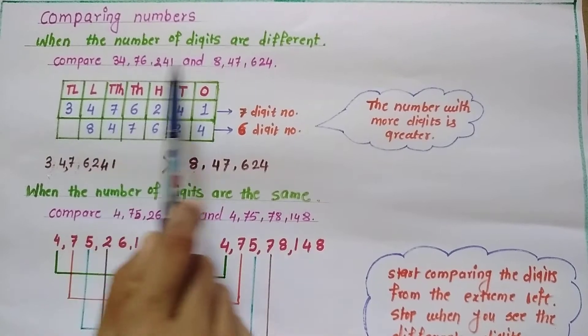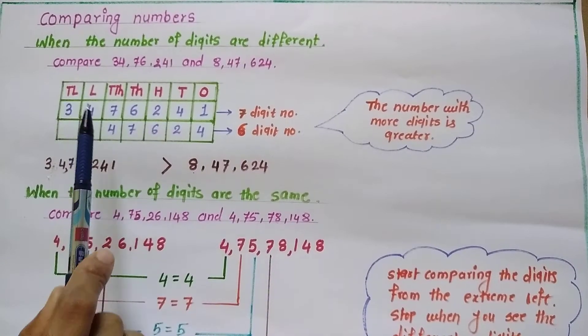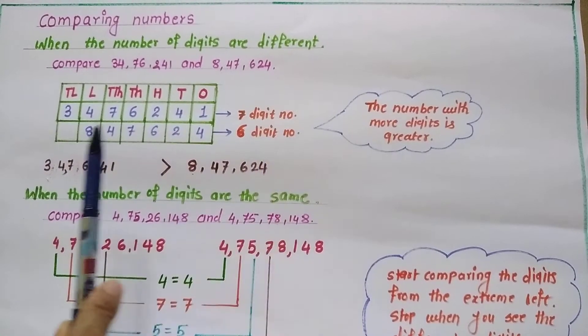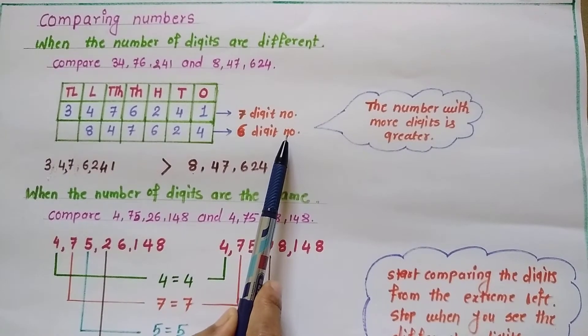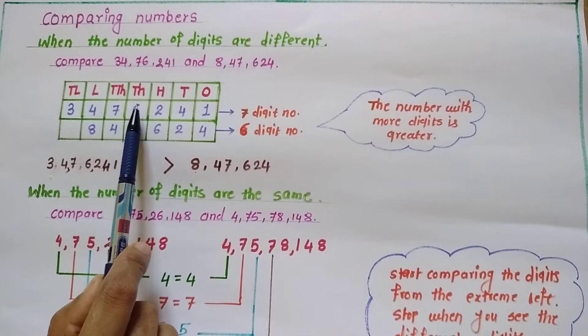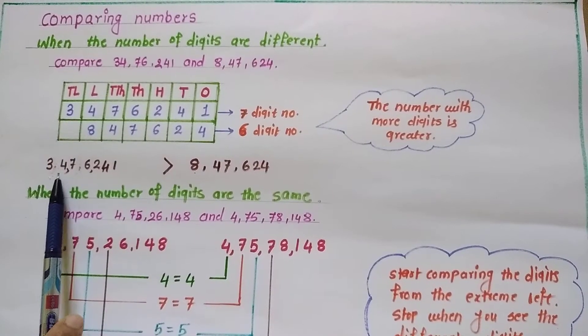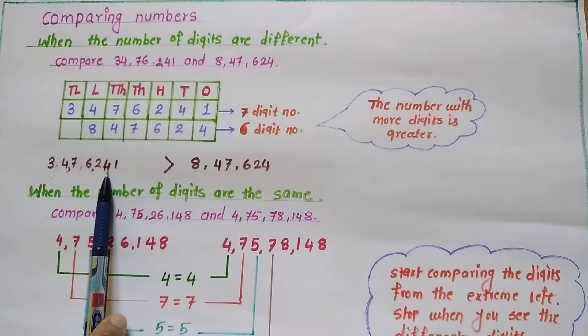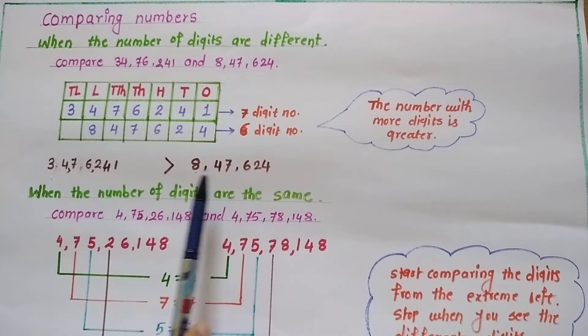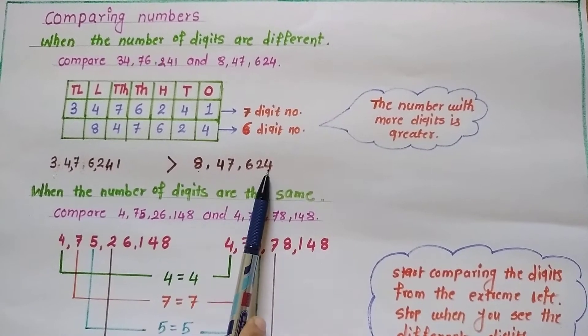As per the two numbers in the given example, the first number is of a 7 digit and the second number is of a 6 digit. So it is very obvious that the first number is greater than the second number. So the number 34,76,241 is greater than the number 8,47,624.